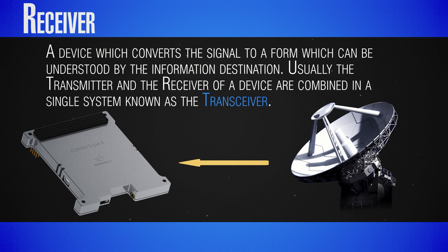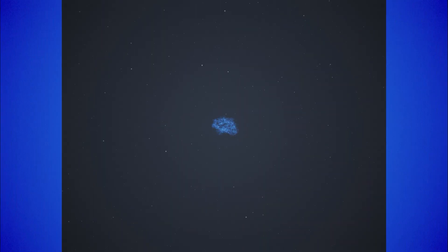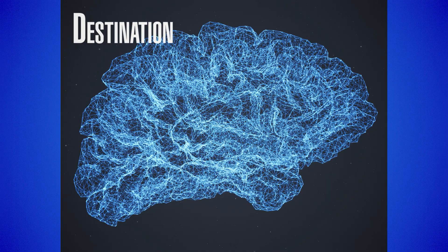Usually the transmitter and receiver are combined in a single system known as a transceiver. It is clear what the destination is—it is the entity for which the original message was intended.